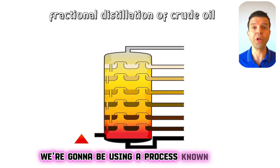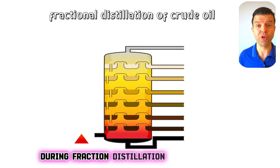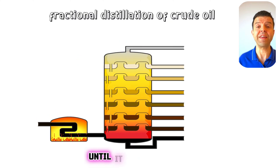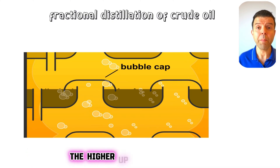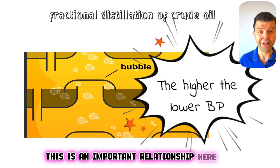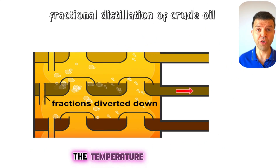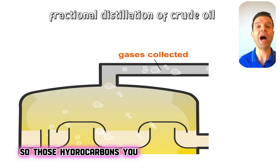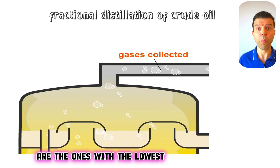We're going to be using a process known as fractional distillation. During fractional distillation of crude oil, we heat up the crude oil at a very high temperature until it evaporates, and then we start separating those fractions. The higher up in the column, the lower the boiling point. If you go up inside the fractionating column, the temperature decreases, and so does the number of carbons.